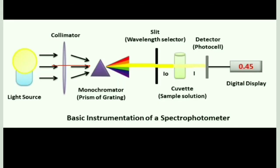Now let us discuss the basic instrumentation of a spectrophotometer. First, light from the light source moves towards the monochromator. From the monochromator, different wavelengths are obtained, which pass through a slit and reach the cuvette. From the cuvette, the light goes to the detector, and the result is finally read out by a digital display. This is the overall setup of a spectrophotometer, used to measure the concentration of solutes in a solution.